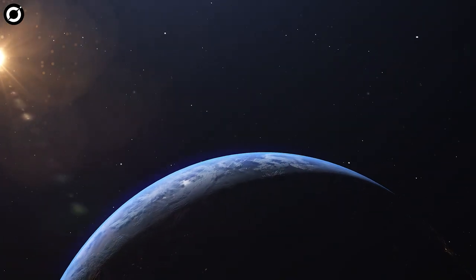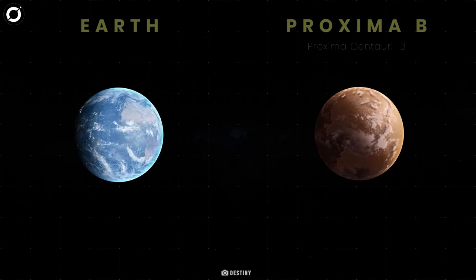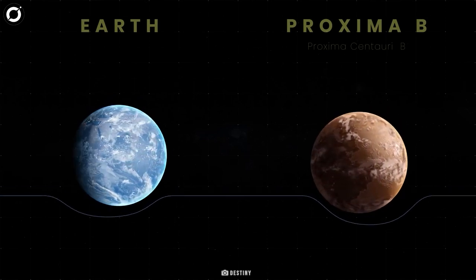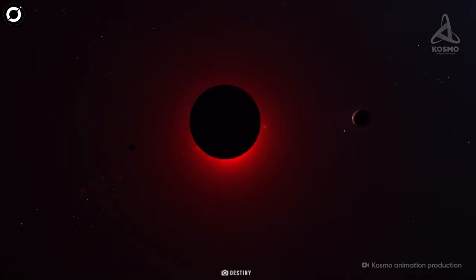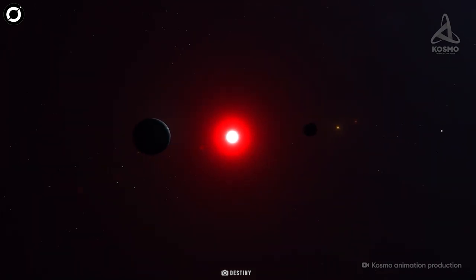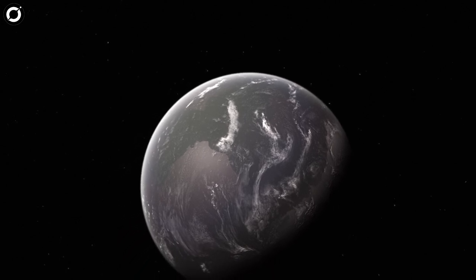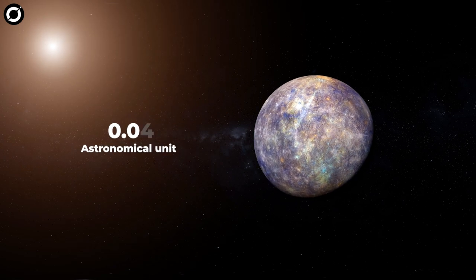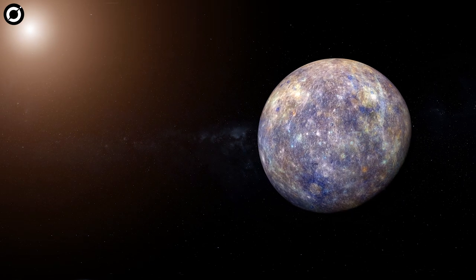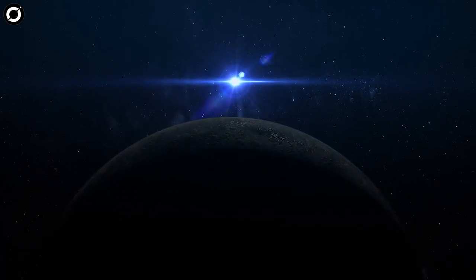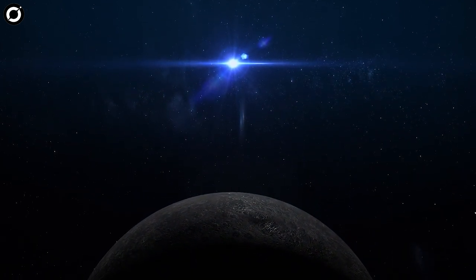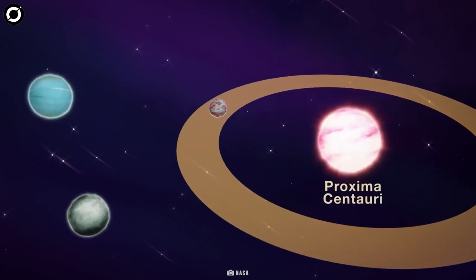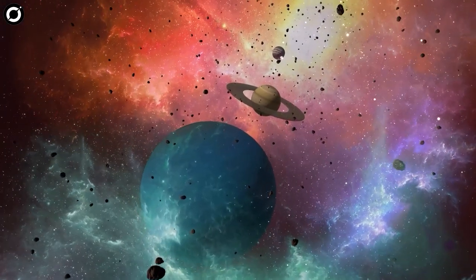Upon closer inspection, Proxima b turns out to be similar to Earth, with a radius of 1.1 Earths and a mass of 1.3 times our planet—a rocky world. However, Proxima b is much closer to its parent star, located only 0.05 astronomical units away, even closer than Mercury at 0.4 AU. Despite this proximity, Proxima Centauri is a faint red dwarf, so the planet receives similar energy to Earth—60 percent from its star—placing it in the habitable zone where life could potentially exist.